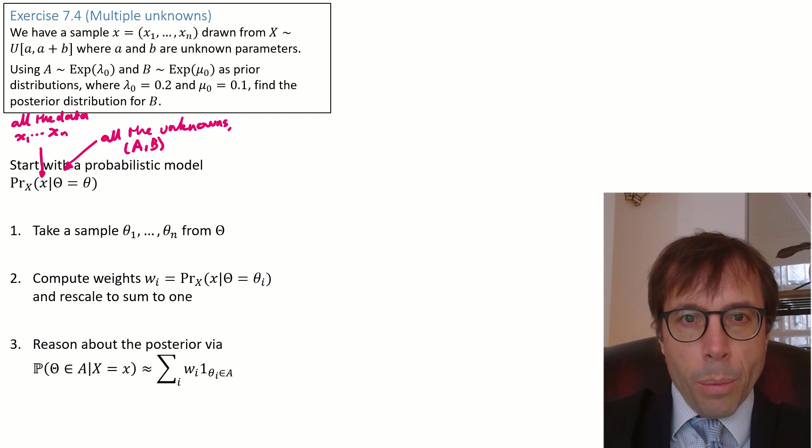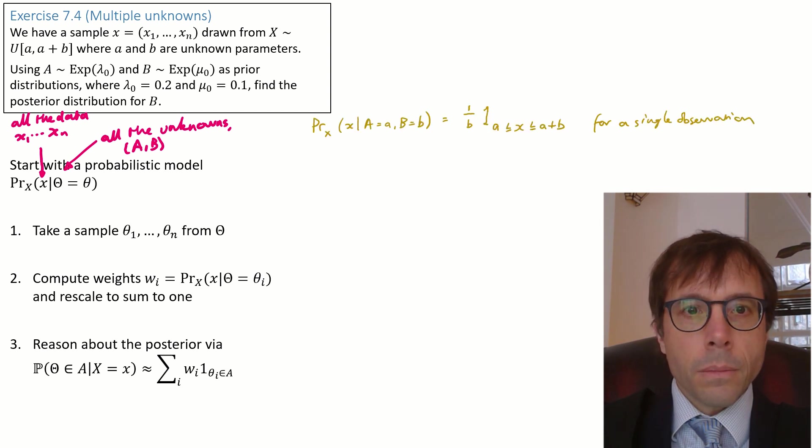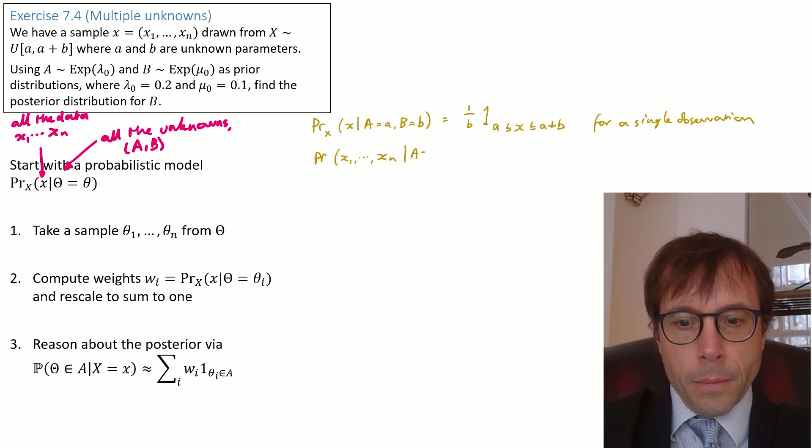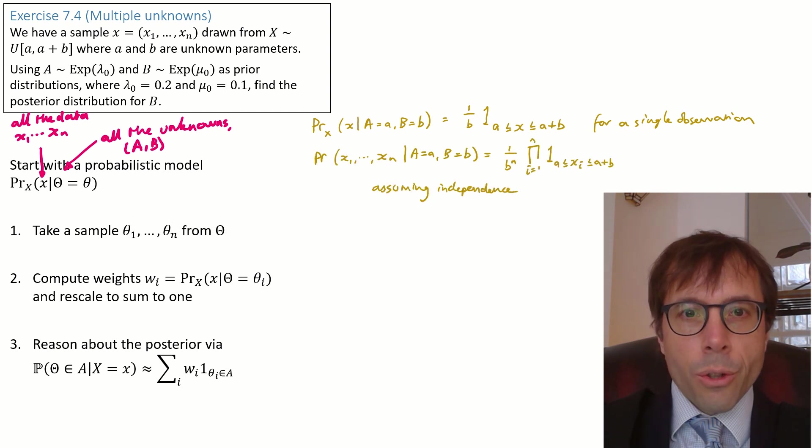OK, so now let's write out the probability model here, the likelihood of X. We've looked at this sort of probability model several times already in the course. Here, we have a sample X1 up to Xn. First, I've written out the likelihood for a single observation. And also, because the boundaries A and A plus B are what we want to reason about, I've written out the likelihood in this indicator function notation. That's the trick we used right at the beginning of the course. And then, the likelihood for a sample X1 up to Xn is just the product of the likelihoods for each individual data point.